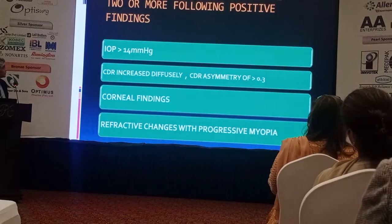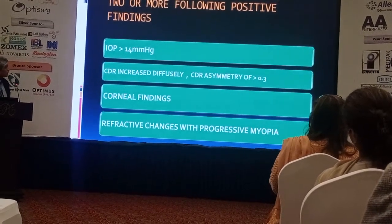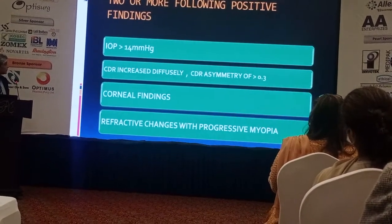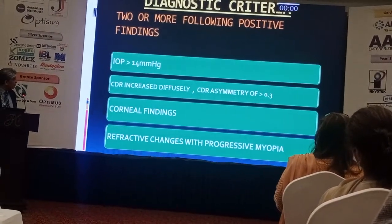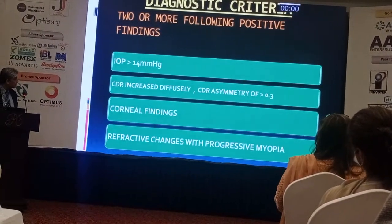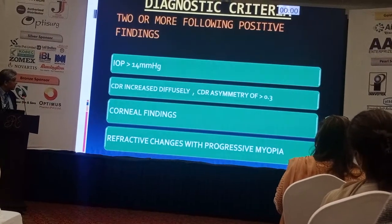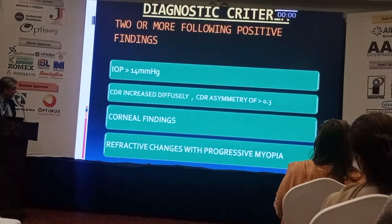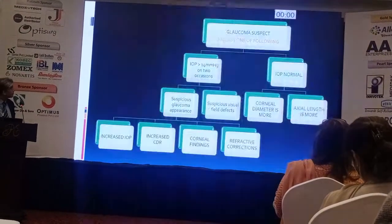The diagnostic criteria require two or more of the following positive findings to label a patient with congenital glaucoma: IOP more than 14 mmHg, cup-to-disc ratio increased diffusely or asymmetry more than 0.3, corneal findings, and refractive changes with progressive myopia.